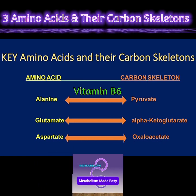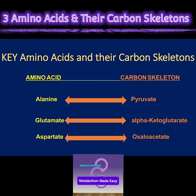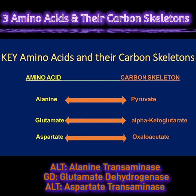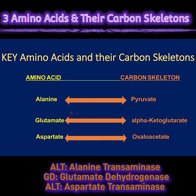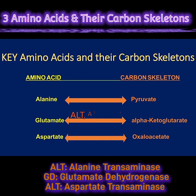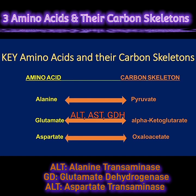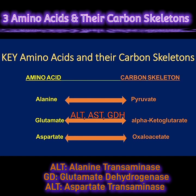The second amino acid is glutamate, and the carbon skeleton derived from glutamate is alpha-ketoglutarate. Glutamate can be metabolized in one of three distinct ways: by either ALT, by AST, or by glutamate dehydrogenase.